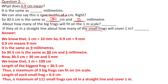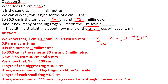We know that 1 centimetre equals 10 millimetres. So 0.9 centimetre is actually 9 millimetres — in decimal, 9/10 centimetre or 0.9 centimetre. So 0.9 centimetre equals 9 millimetres. And 30.5 centimetre can be written as 30 centimetre and 5 millimetre.